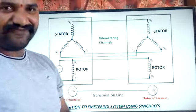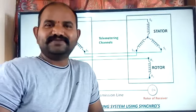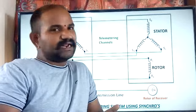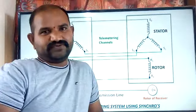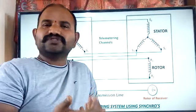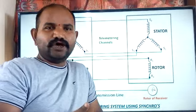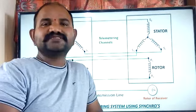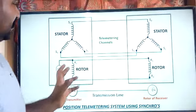This is another kind of position telemetering system. In the position telemetering system we may use sliding contact potentiometers, or we can use the synchro transmitter and receiver. The synchro transmitter and receiver work based on the stator and rotor — the motor concept we have seen in the case of the stepper motor.